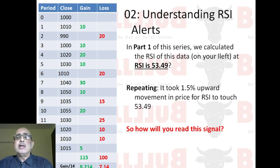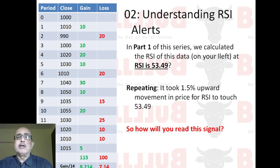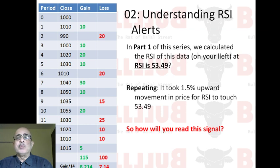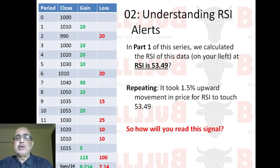For those who have seen yesterday's video, let's start. Yesterday we saw that we calculated the RSI in a particular data example at 53.49. At the end we concluded that it took 1.5% upward movement in price for the RSI to touch 53.49. Today we will tackle how we will read the signal.